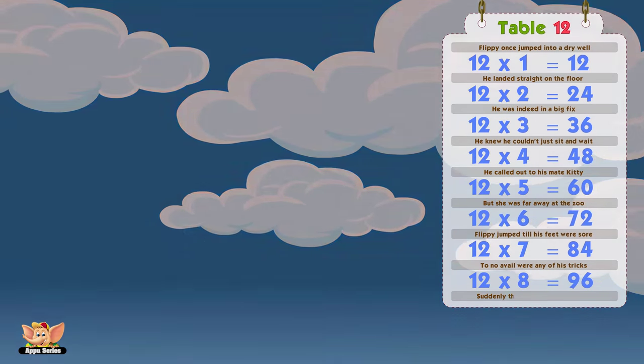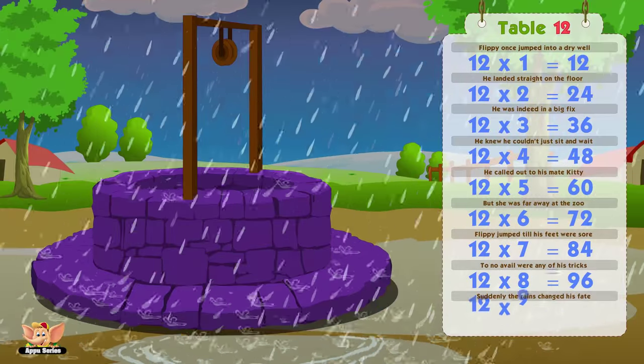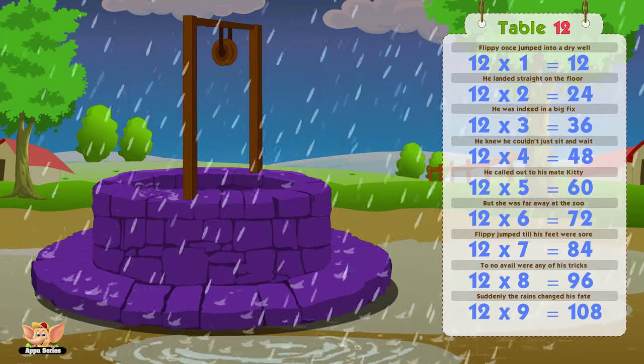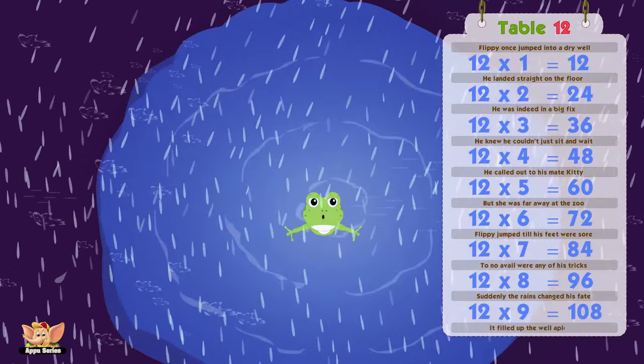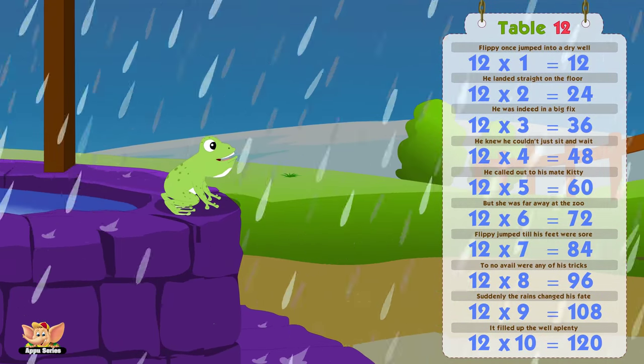Suddenly the rains changed his fate. Twelve nines are hundred and eight. It filled up the well of plenty. Twelve tens are hundred and twenty.